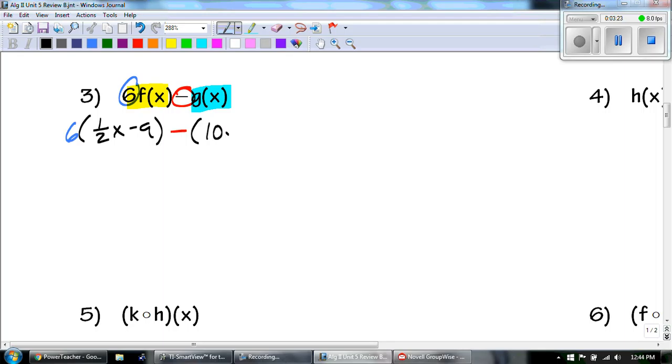Number 3. You have to look what's out in front. So I have 6 times f of x minus g of x. So I have this 6 out front. And then I'm going to write f of x, which is 1 half x minus 9. And then we are subtracting that with g of x, which is the 10x squared minus 6x plus 4.